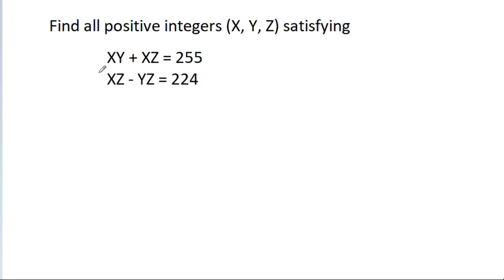In this video, we are given that xy - xg = 255 and xg - yg = 224, and we have to find all positive integers x, y, g.